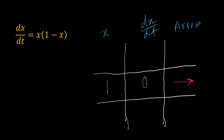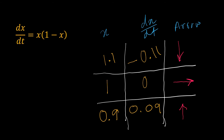Now take a slightly higher value of x, say x equal to 1.1. For x equal to 1.1, dx/dt is minus 0.11. As the derivative is negative, x will decrease with time, so we draw a downward arrow. Now take a value slightly lower than the steady state. For x equal to 0.9, dx/dt is positive, so with time x will increase — we draw an arrow pointing up. Both arrows above and below the steady state are pointing towards each other, so this steady state is a stable steady state.